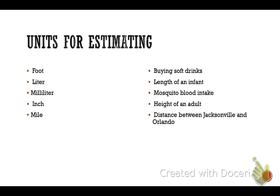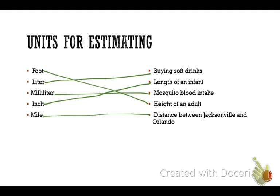A section like this on your homework tonight where it says, what is the most appropriate unit to use? We're going to talk a little bit about conversion. So go ahead and just match them up. Draw your lines and match them up. So what did you match with foot? Height of an adult. Very good. What did you match with liter? Soft drink. Two liters. What about milliliter? Mosquito blood. Remember that one. What about inches? Length of an infant. Yeah. When babies are born, they're like 21, 22 inches. And then mile is Jacksonville, Orlando. So we have an idea of what's an appropriate unit to use.